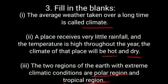Next question: Fill in the blanks. First, the average weather taken over a long time is called climate. Second, a place receives very little rainfall and the temperature is high throughout the year — the climate of that place will be hot and dry. Next, the two regions of the earth with extreme climatic conditions are the polar region and the tropical region.